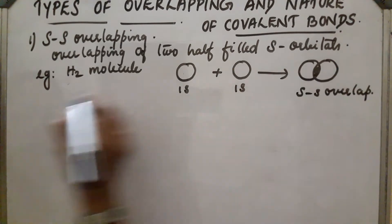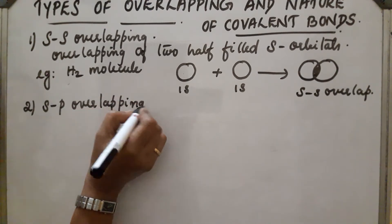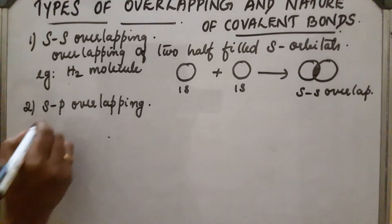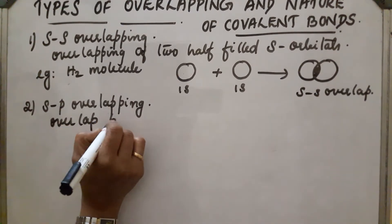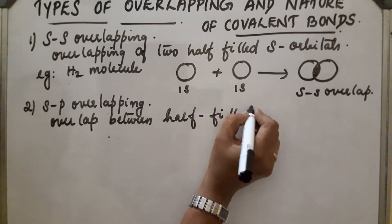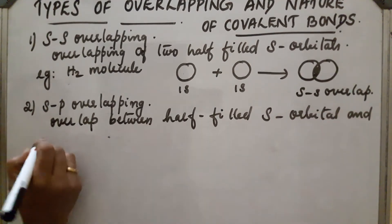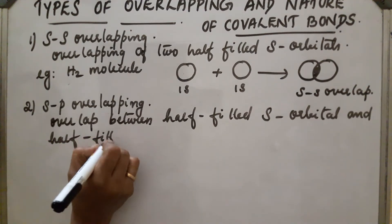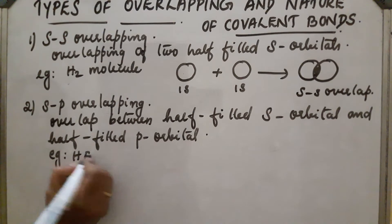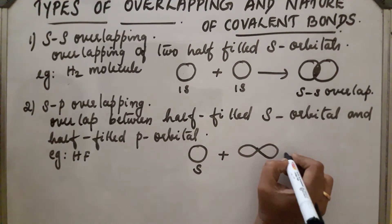The second type is S-P overlapping, where overlapping takes place between the S orbital of one atom and the P orbital of another atom — specifically between a half-filled S orbital and a half-filled P orbital along the inter-nuclear axis. An example is the HF molecule, where the S orbital of hydrogen overlaps with the P orbital of fluorine.